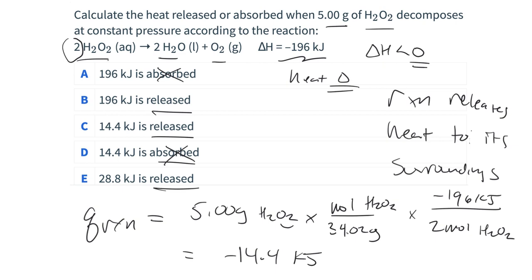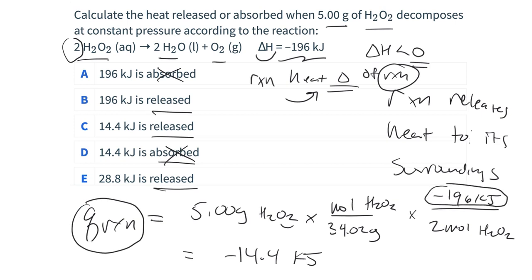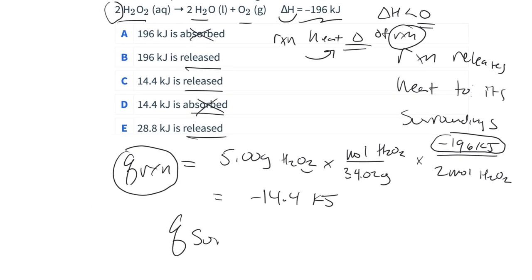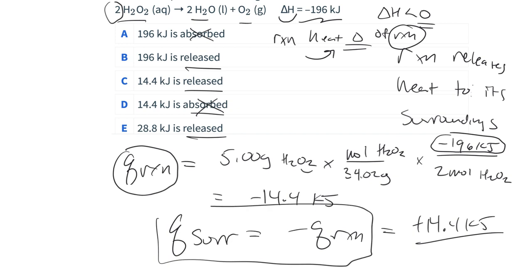If the reaction loses 14.4 kJ of heat, that's the heat that goes into the surroundings. The heat of the surroundings is always the opposite sign of Q_reaction, so Q_surroundings = +14.4 kJ. This is always true: if Q_reaction is negative, Q_surroundings is positive — the reaction loses heat, the surroundings gains the heat. We have 14.4 kJ of heat released by the reaction that's then absorbed into the surroundings.